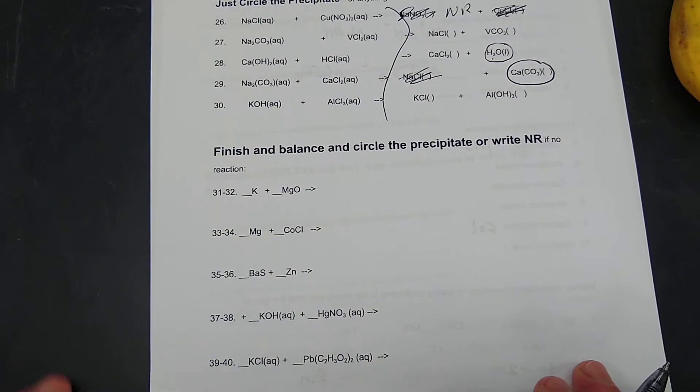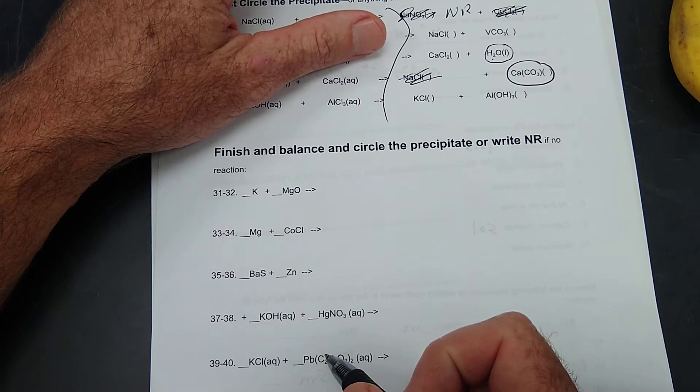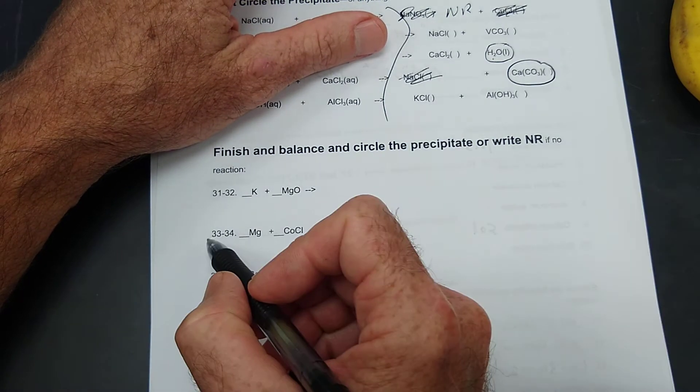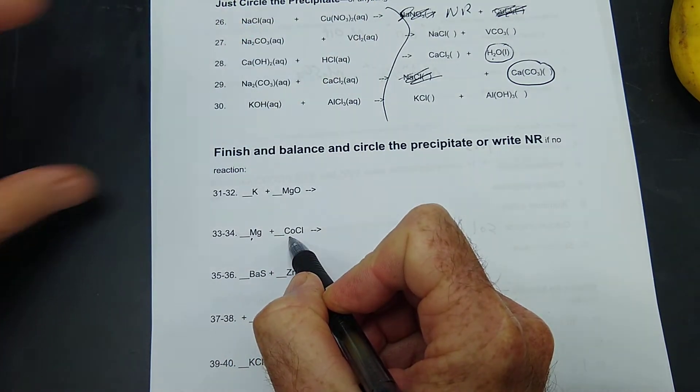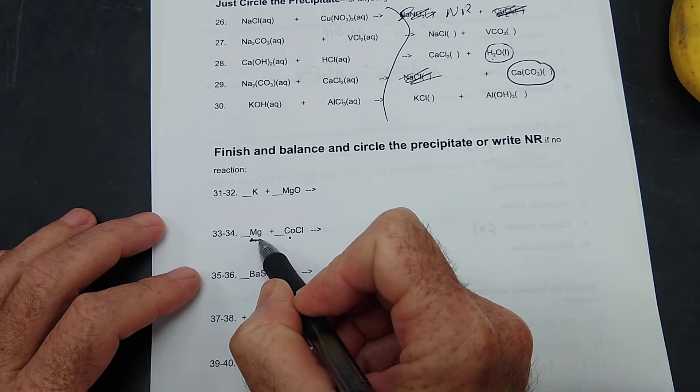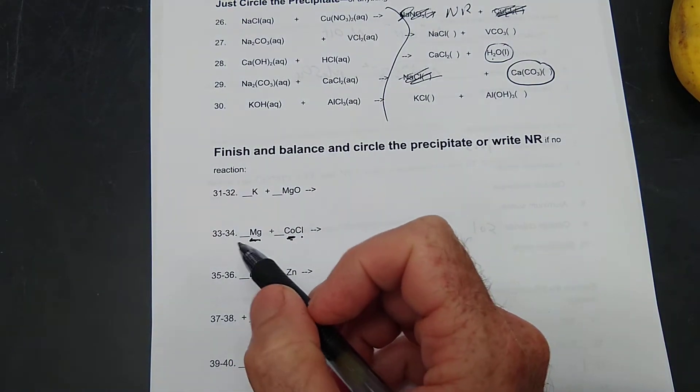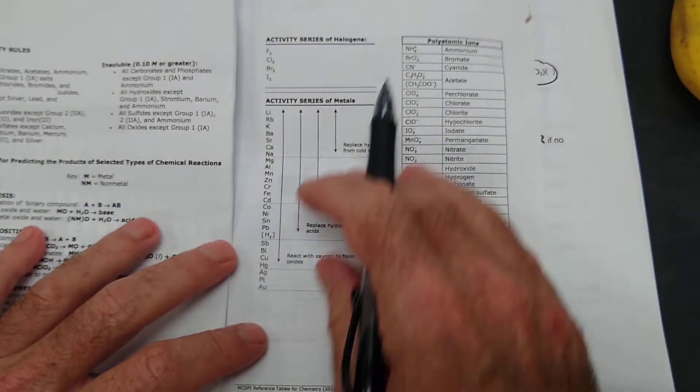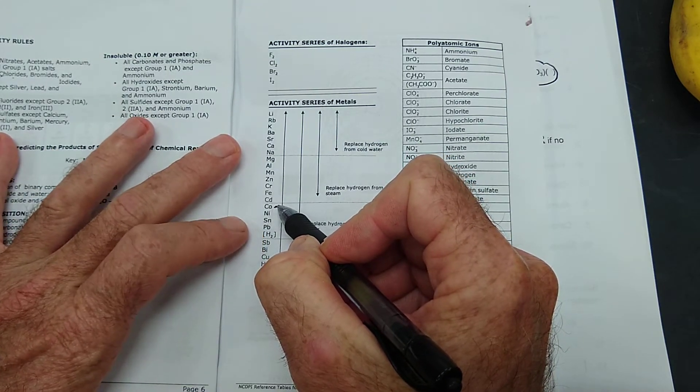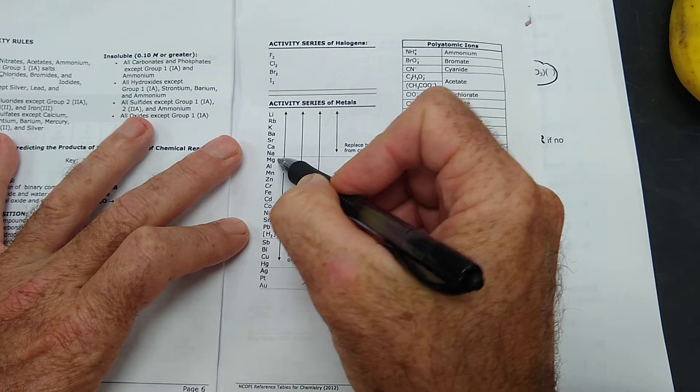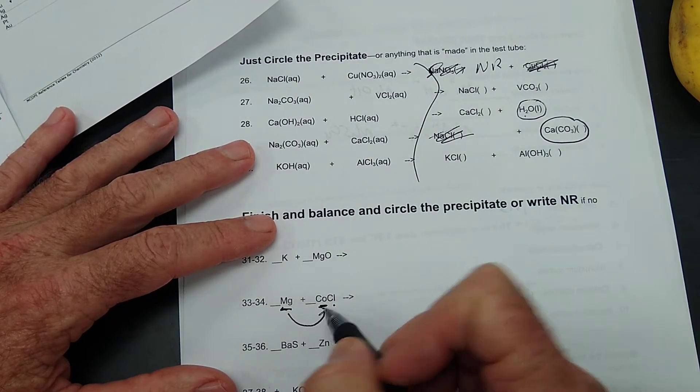Finish and balance and circle the precipitate. How about this? This is a single replacement reaction. Magnesium and cobalt. Let's see. Is magnesium better looking than cobalt? Will chlorine leave cobalt for magnesium? We look on the top of page 7. And we see that here's cobalt right here, and magnesium is up here. So magnesium is better looking. So magnesium will take cobalt's girlfriend.